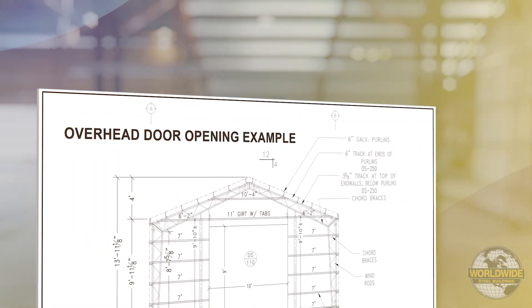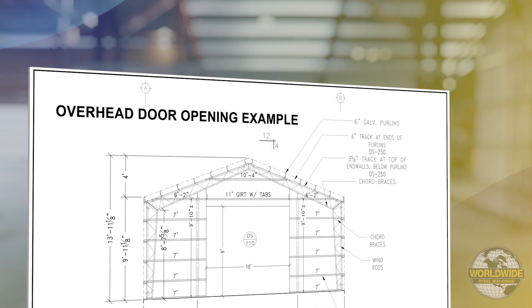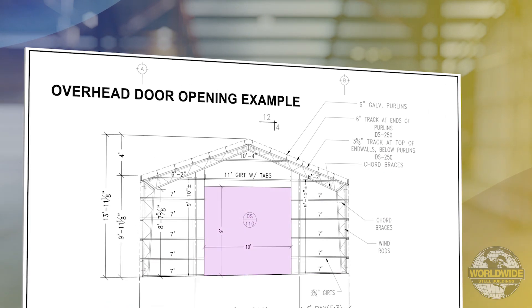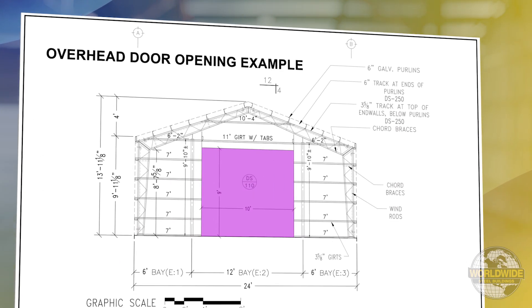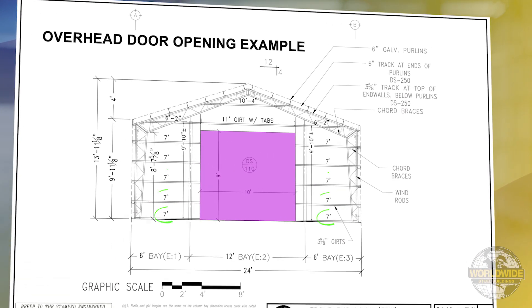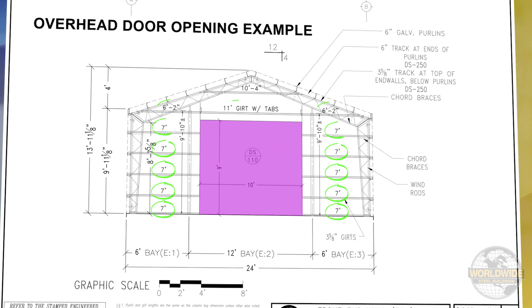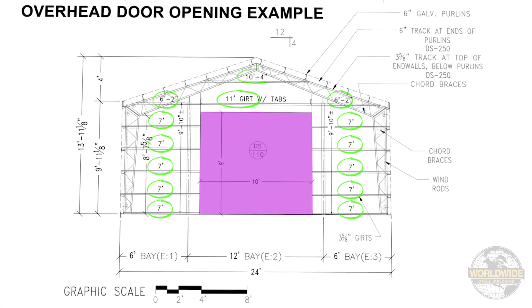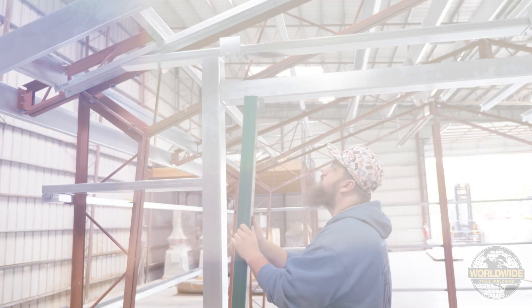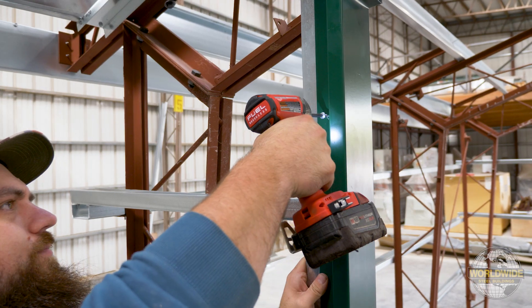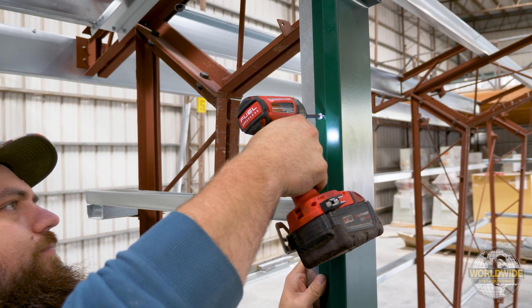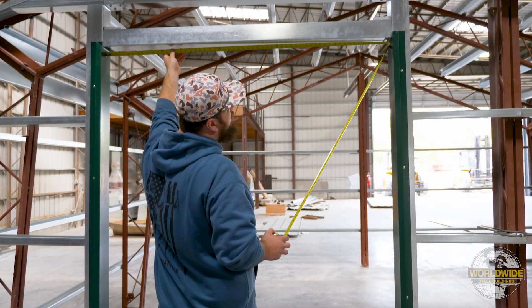If you have an overhead door framed opening in your walls, then the length of the girths necessary to install will be shown on your W drawings. Refer to our overhead door framing installation video for additional information.